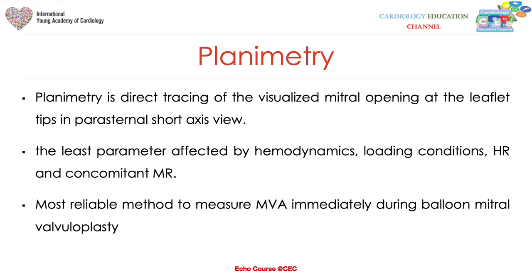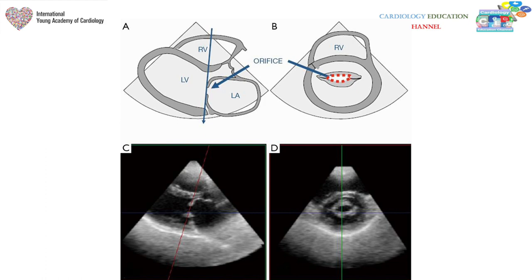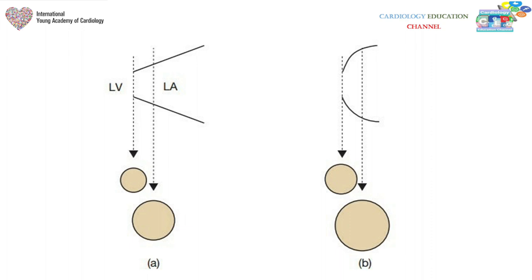Tips for performing good planimetry: place the mitral valve at the center of the sector in the parasternal long axis view where the ultrasound beam is strongest. Rotate the probe to get the short axis view, then sweep up and down from the mid papillary muscle toward the base of the mitral annulus until you get the leaflet tips — the narrowest point. Keep the tips of the leaflets at the center of the image, rotate 90 degrees for the short axis, and start planimetry.